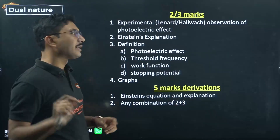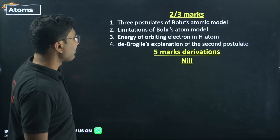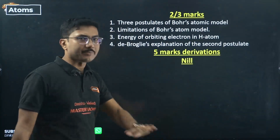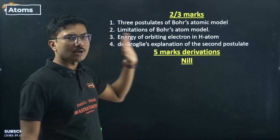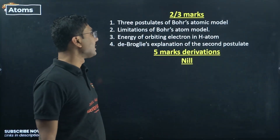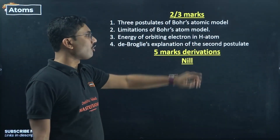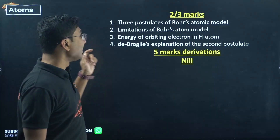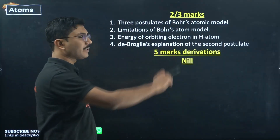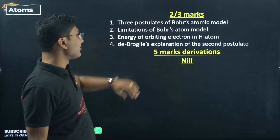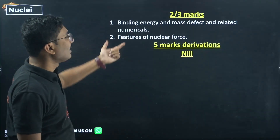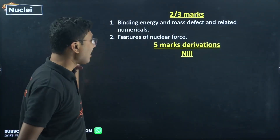Atoms chapter: no derivations are expected. If you haven't prepared it you can skip it, but it's a small chapter so try not to. Key topics: three postulates of Bohr's atomic model, limitations of Bohr's atomic model, energy of orbiting hydrogen atom, and de Broglie's explanation of Bohr's second postulate — the last one is slightly trickier, but the first three are easy to answer.